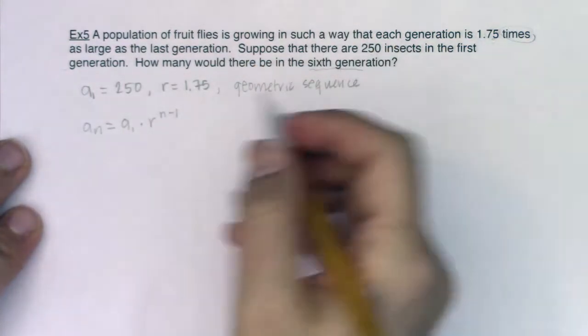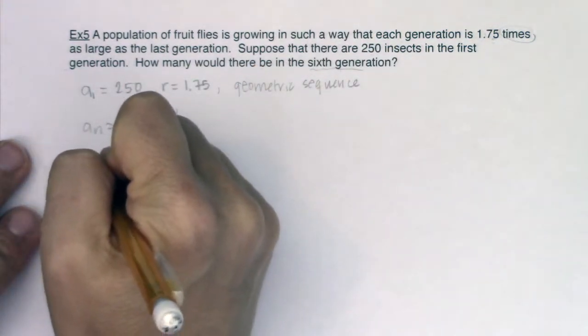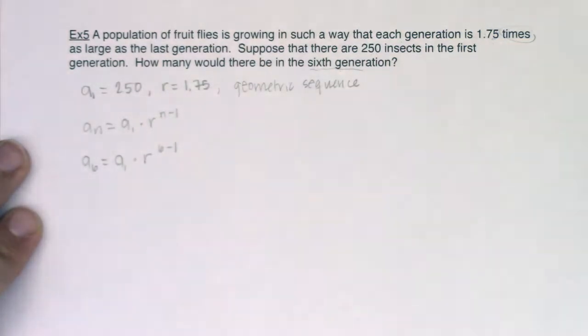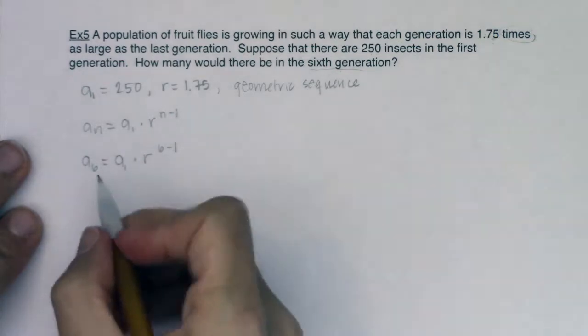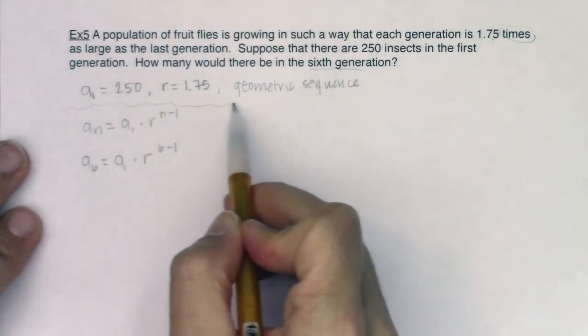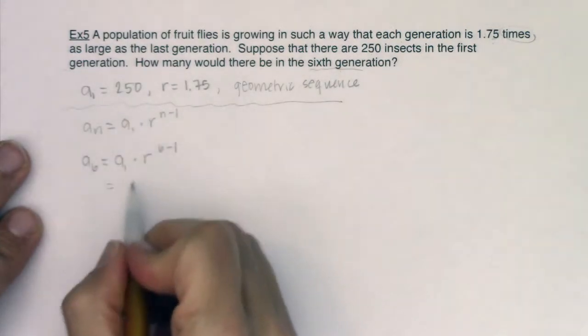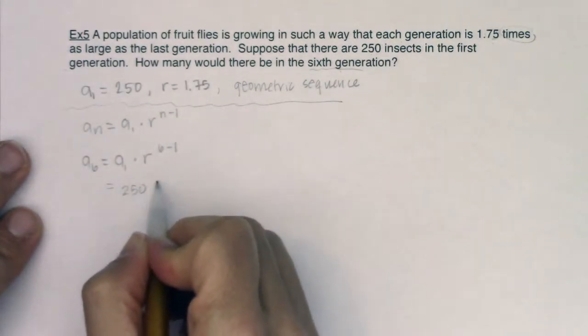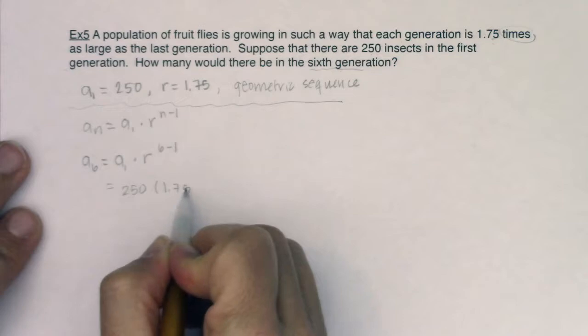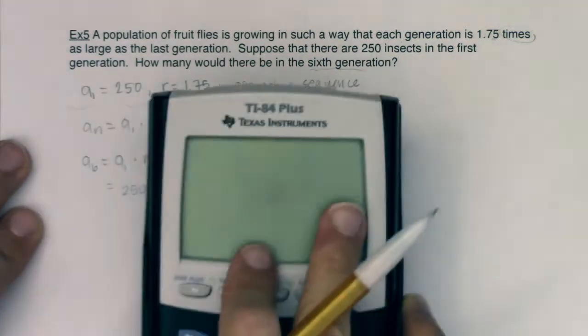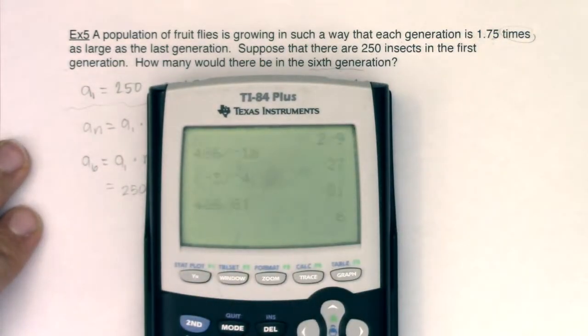And we would like a sub 6. So a sub 6 is going to be equal to a sub 1 times r to the 6 minus 1. Let's see what we have here. That's our given. So we have a sub 1 being 250 times r to the fifth power. And then let's just crunch this number and see what we have. So this is 250 times 1.75 to the fifth.